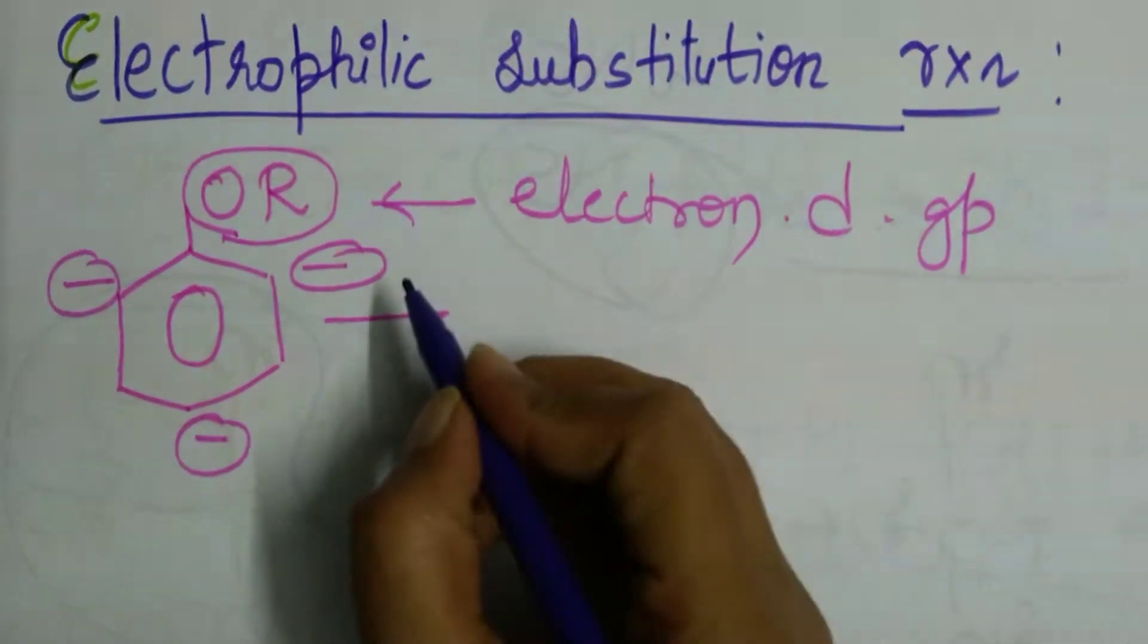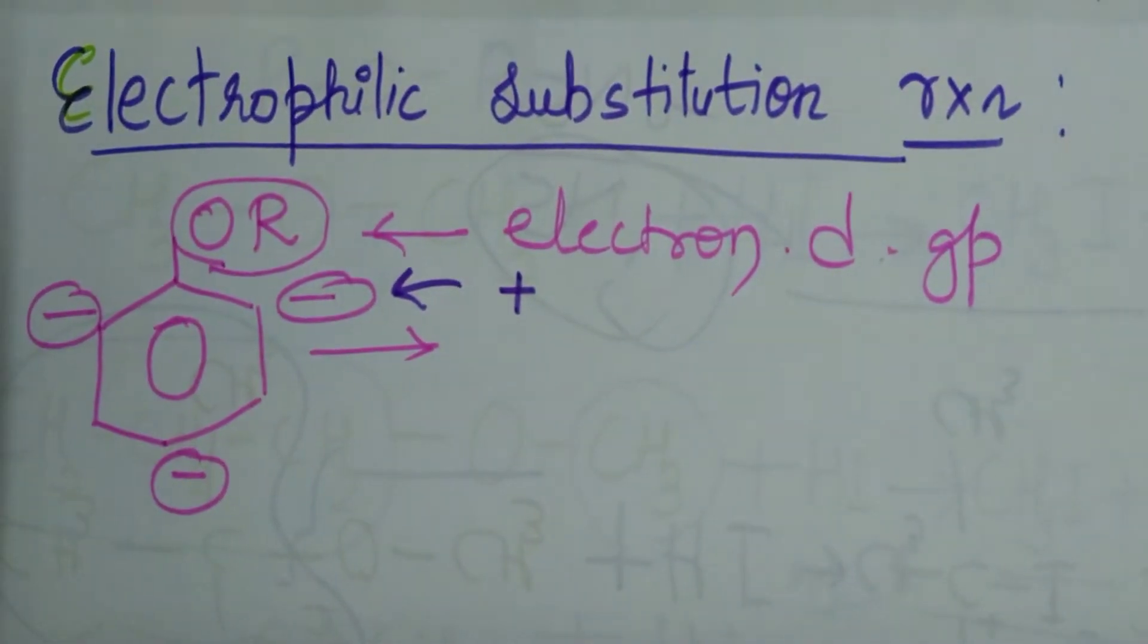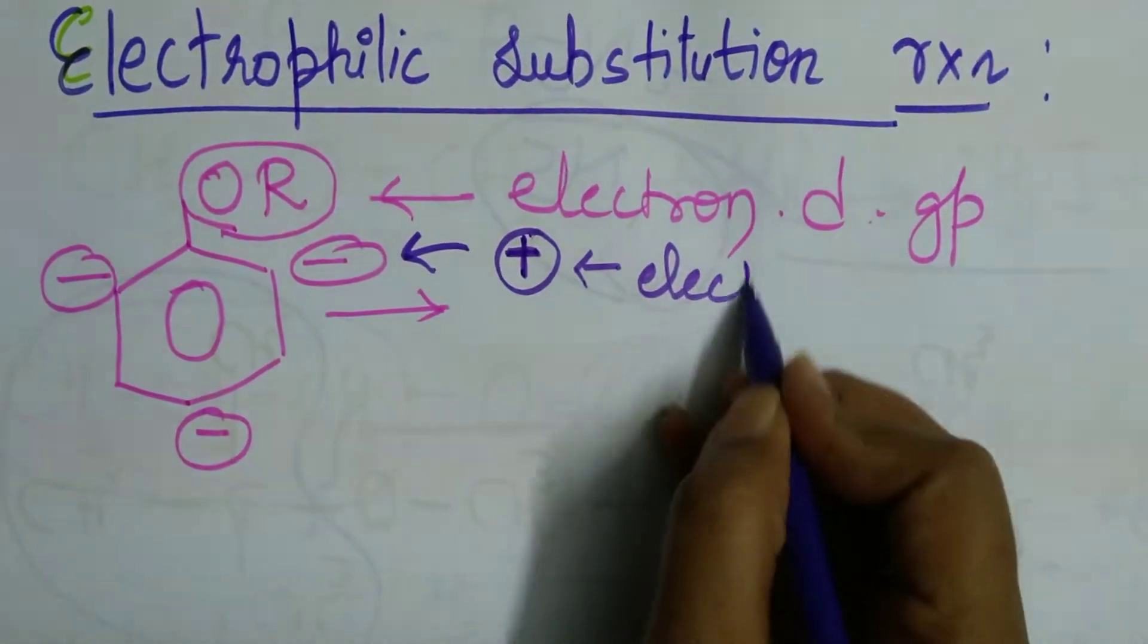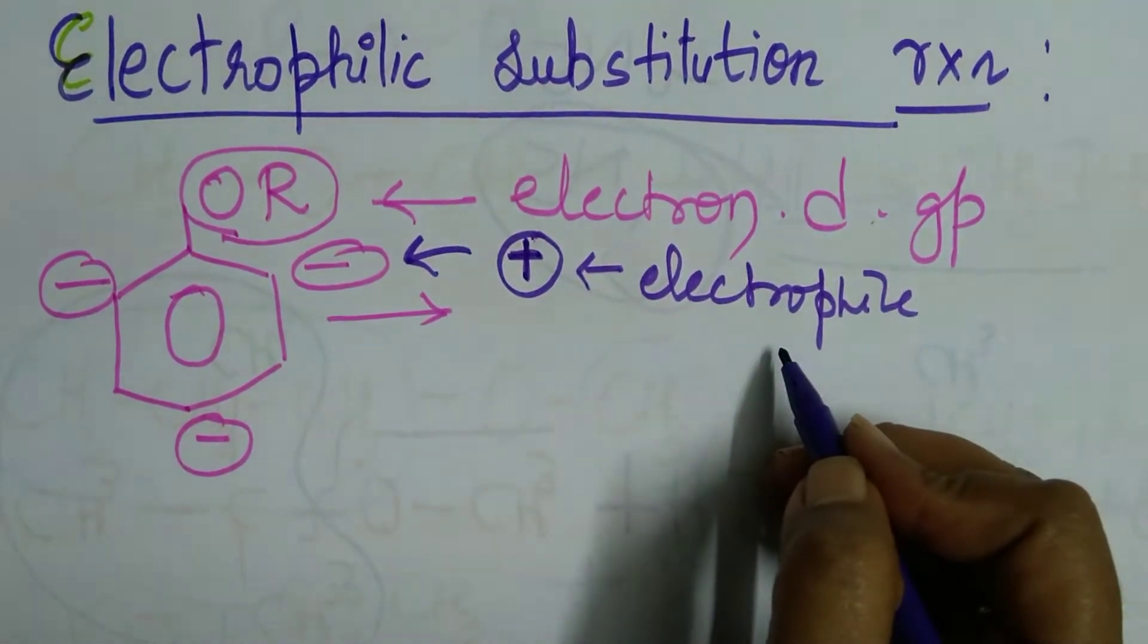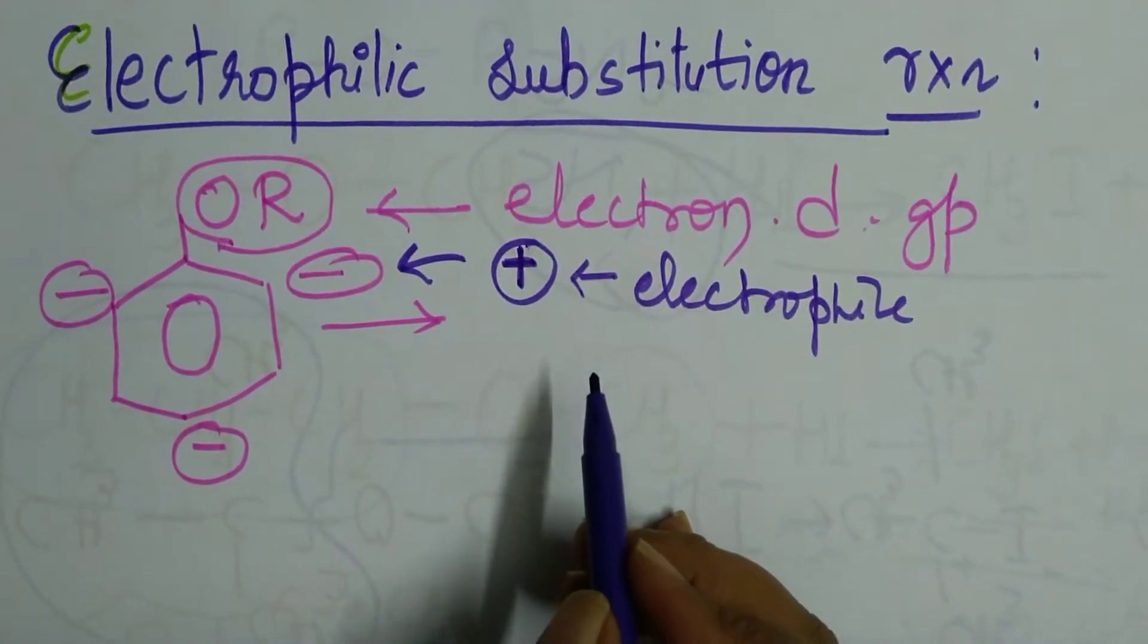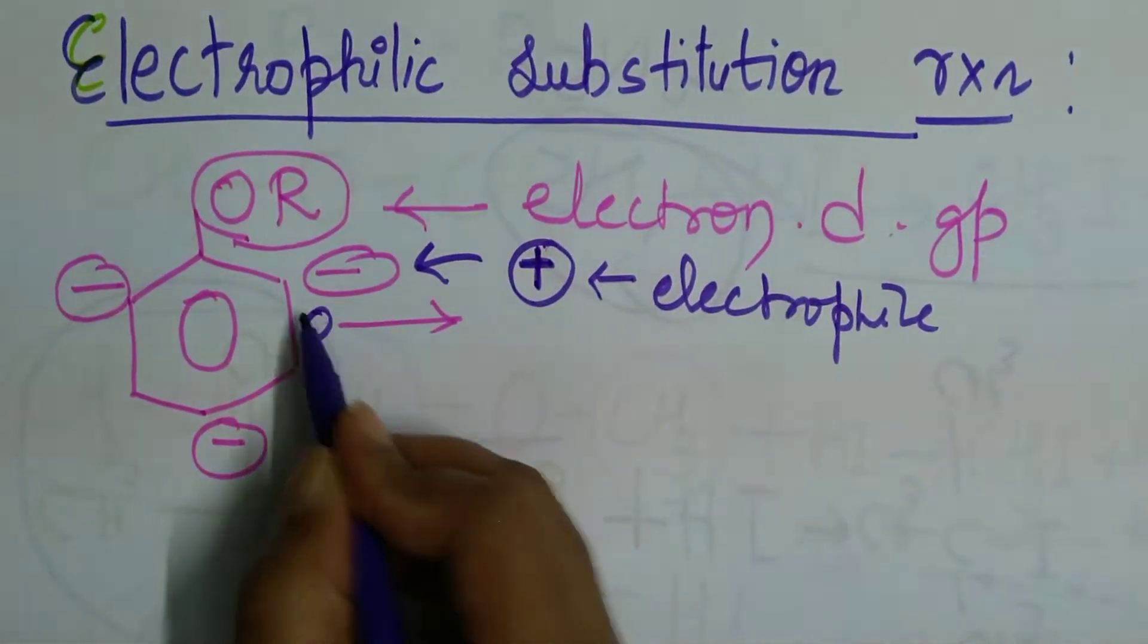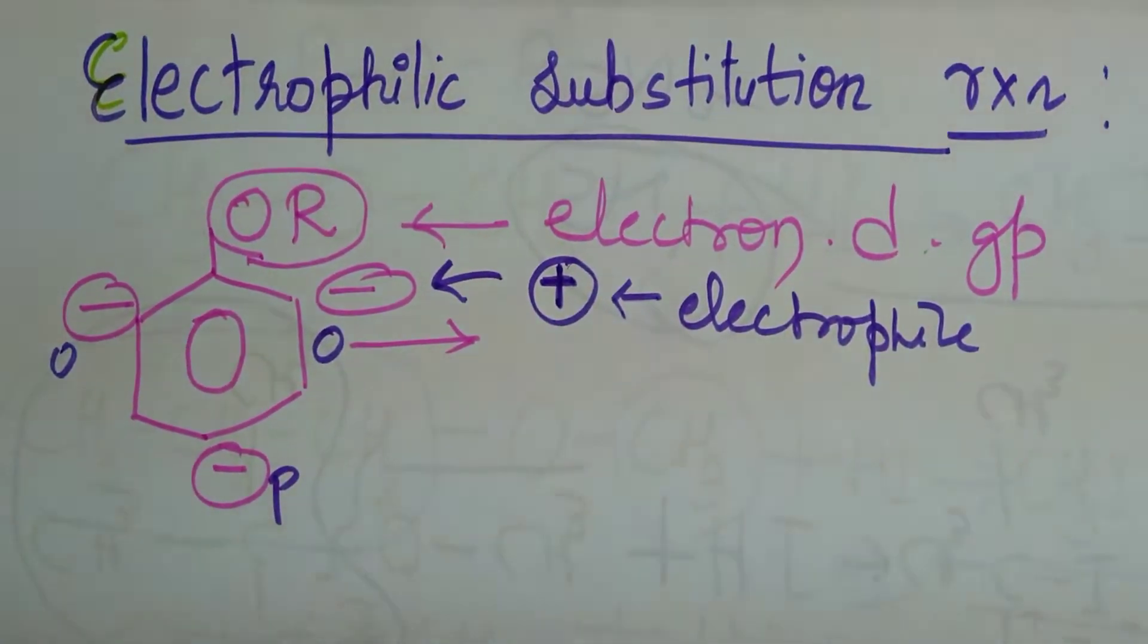These positions should be attacked by positively charged groups which are called electrophiles. Electrophiles are positively charged atoms or groups of atoms. So our aromatic ethers will undergo electrophilic substitution reactions at ortho and para positions. Which reactions are we going to study here?